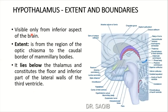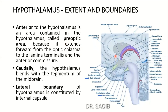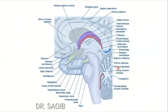Here is the extent and boundaries of the hypothalamus. It is visible only from the inferior aspect of the brain. The anterior boundary is the optic chiasma, and posteriorly it extends to the mammillary bodies - the caudal aspect of the mammillary bodies.